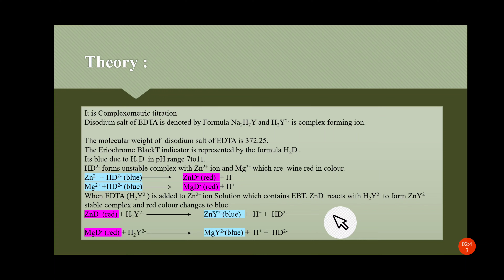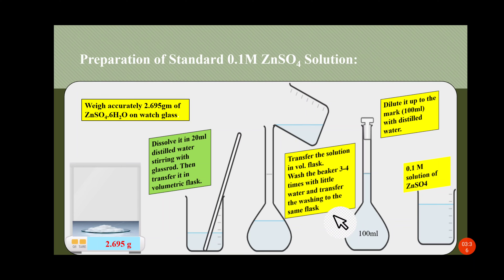When EDTA is added to the Zn²⁺ ion solution containing Eriochrome Black T indicator, the ZnD⁻ complex having wine red color reacts with H2Y²⁻ from the EDTA. It forms ZnY²⁻, a stable complex, and the wine red color changes to blue. The zinc-indicator complex reacts with EDTA ions to form a metal complex. That complex is colorless, but the indicator ion regains its original blue color. That is why the endpoint of titration is wine red to blue.